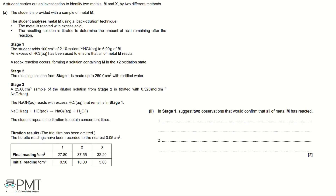Part 2: Suggest two observations that would confirm that all of metal M has reacted. First, we know hydrogen gas is produced in Stage 1, so the bubbles or effervescing will stop — the fizzing stops. Second, metal M is a solid being converted to an aqueous solution, so the metal will disappear or dissolve. One mark for each observation.